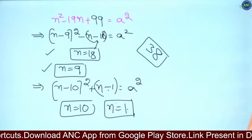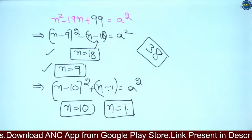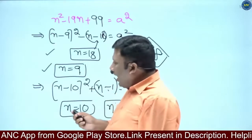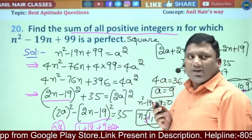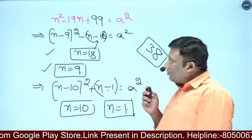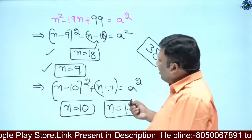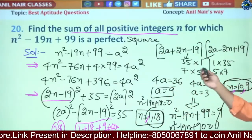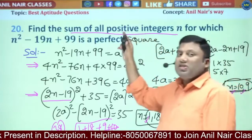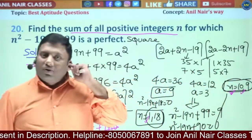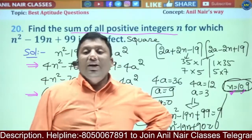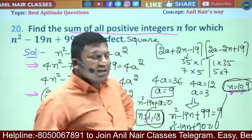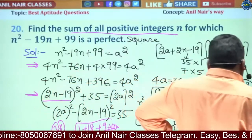Very, very good question. I hope the idea is very, very clear to you — a very interesting and observational question. Either you can do this by the traditional method, or you can optimize the question like this. I would suggest going with this method because this will give you all the factors: 35 into 1, 5 into 7 — there is no other way. The question specifies positive integers, which is the reason we have not taken minus 1 into minus 35 or minus 35 into minus 1. Very, very good question — right after the class, revise it as many times as possible.